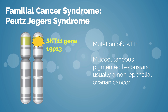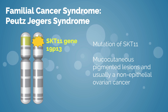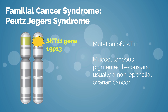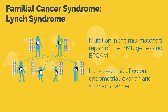Peutz-Jeghers syndrome is a mutation in STK11. About 95% of patients will have mucocutaneous pigmented lesions, and usually a non-epithelial ovarian cancer in about 21% of patients. Cancers are usually diagnosed at a mean age of 27. They also show an increased risk of GI and breast cancer. Lynch syndrome is caused by a mutation in the mismatch repair (MMR) genes and a mutation in the epithelial cell adhesion molecule (EPCAM) gene.